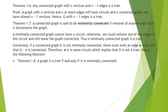Conversely, if a connected graph is not minimally connected, there must exist an edge E in G such that G minus E is connected. Therefore E should be in some circuit, which implies that G is not a tree — a contradiction. So the theorem states: a graph is a tree if and only if it is minimally connected.